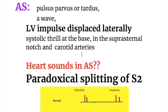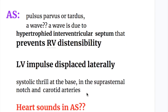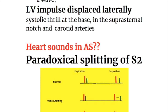Other features of the aortic stenotic murmur include pulsus parvus et tardus - a weak pulse - and an A-wave in the neck. The A-wave in aortic stenosis is due to a hypertrophied interventricular septum that prevents right ventricular distensibility. The left ventricular impulse is displaced laterally in aortic stenosis, and there is a systolic thrill that radiates to the suprasternal notch and to the carotid arteries.